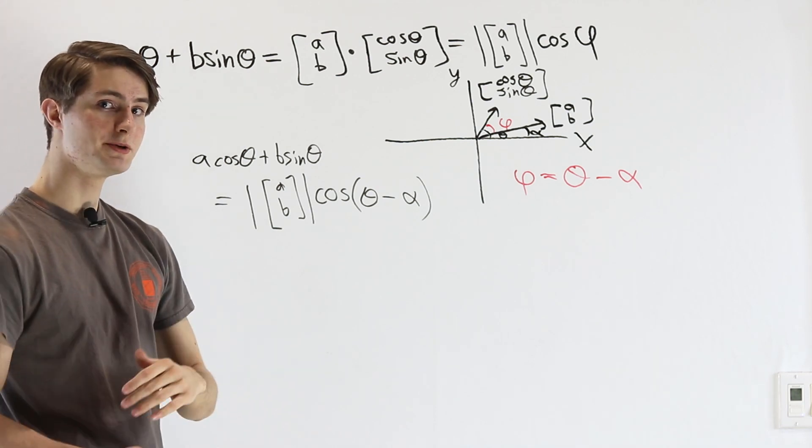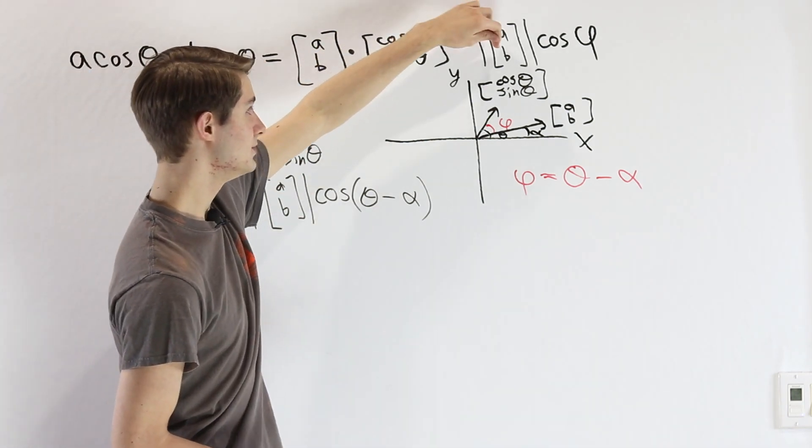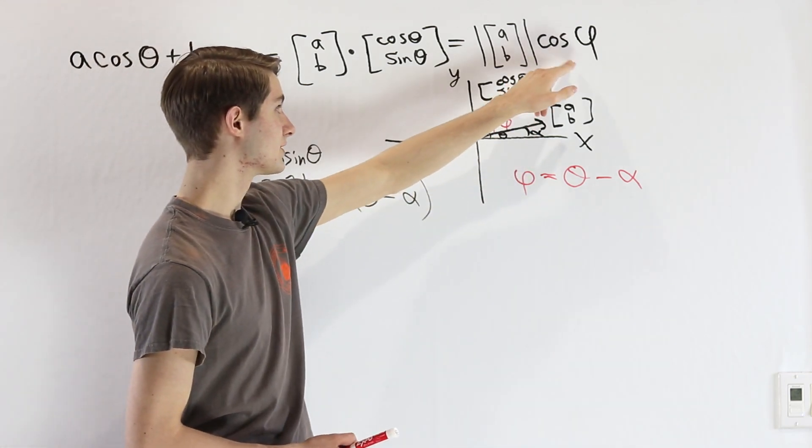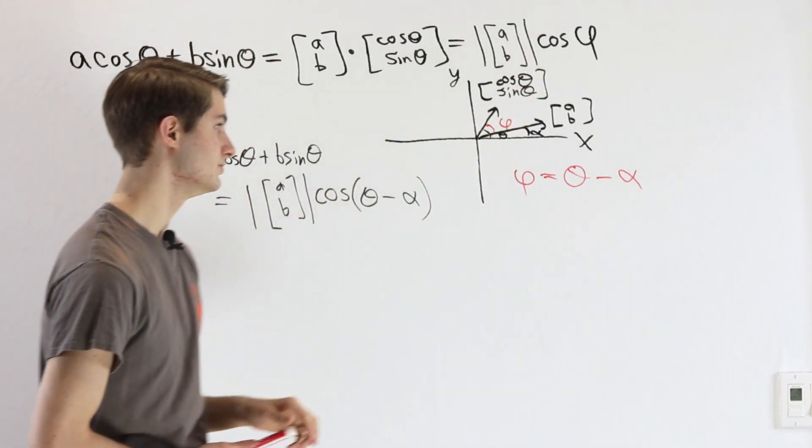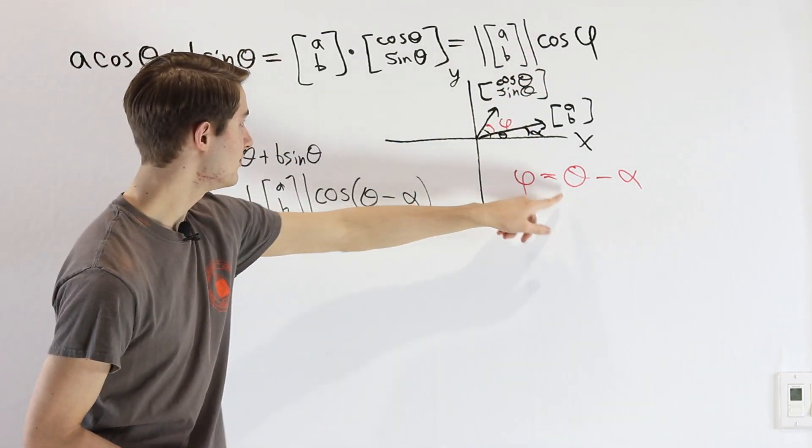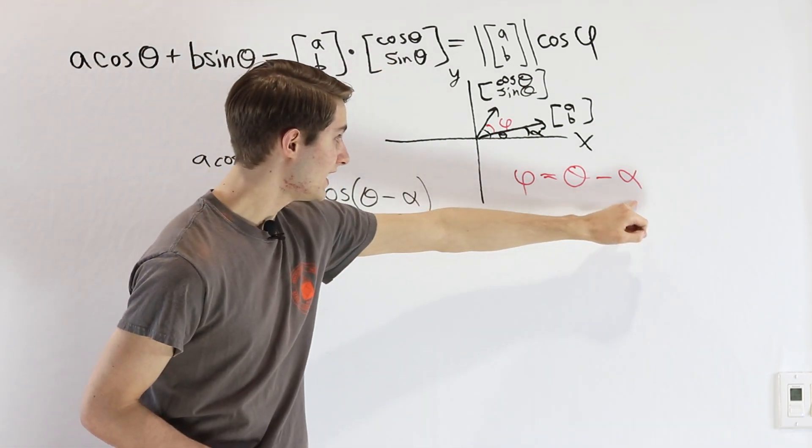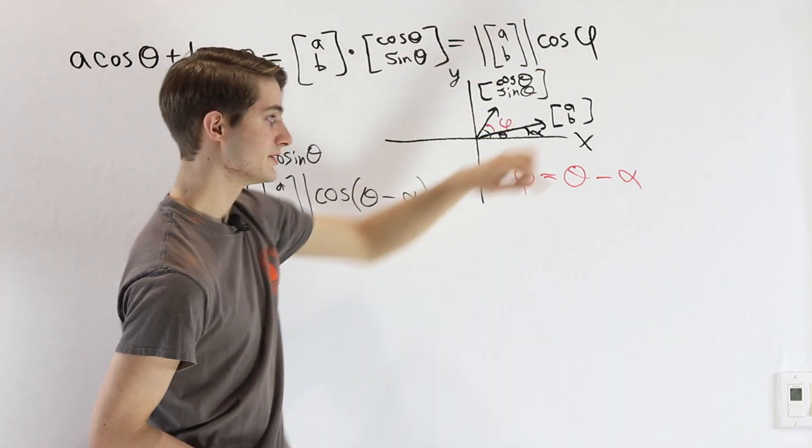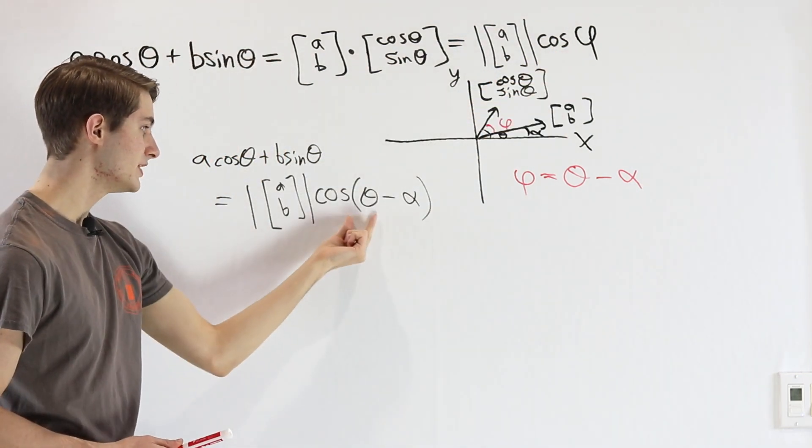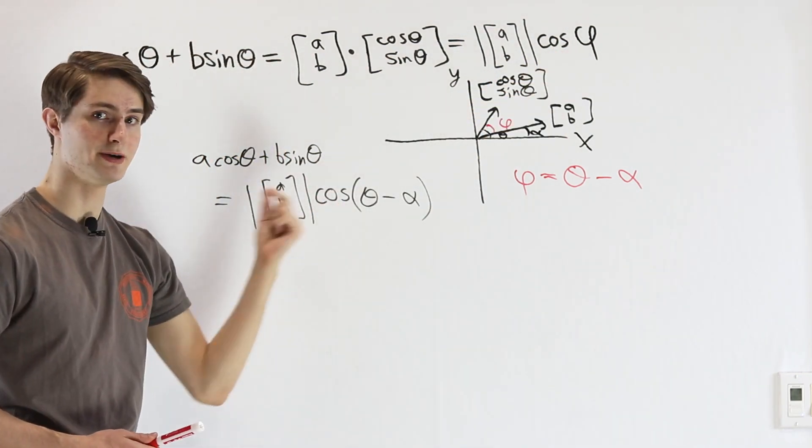We can use formulas for dot products to write that as the magnitude of our vector [A, B] times the cosine of the angle between those two vectors, which we can write as θ, the angle we're plugging into this vector here, minus α, the angle of our vector [A, B]. Therefore, we get the final formula with the cosine of θ - α.